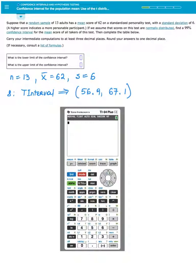Let's do another example. Suppose that a random sample of 13 adults has a mean score of 62 on a standardized personality test with a standard deviation of 6. A higher score indicates a more personable participant. If we assume that scores on this test are normally distributed, find a 99% confidence interval for the mean score of all takers of this test. Then complete the table below. Carry your intermediate computations to at least three decimal places and round your answers to one decimal place.